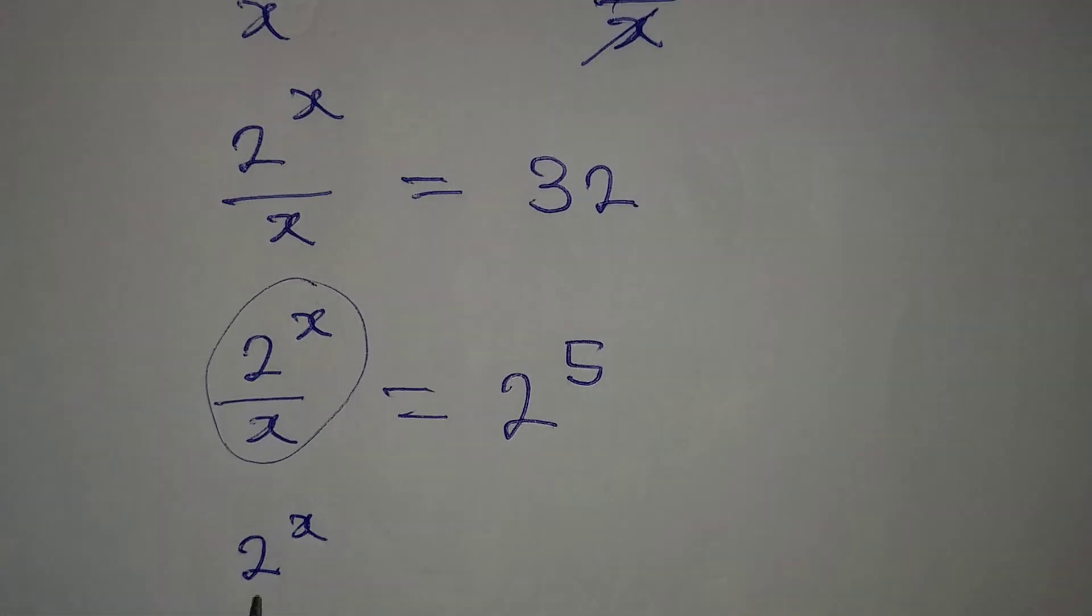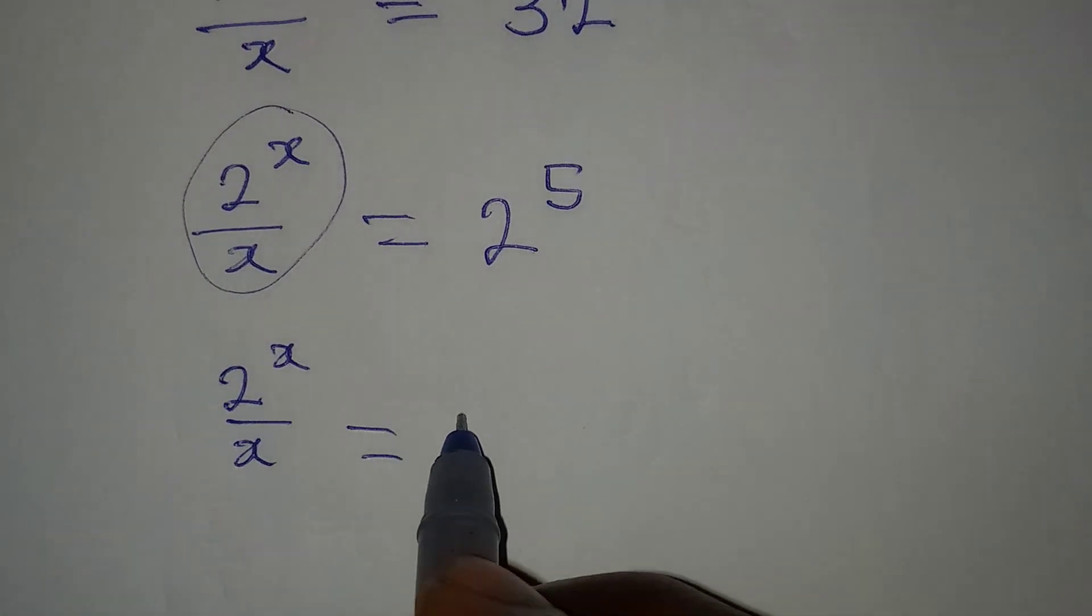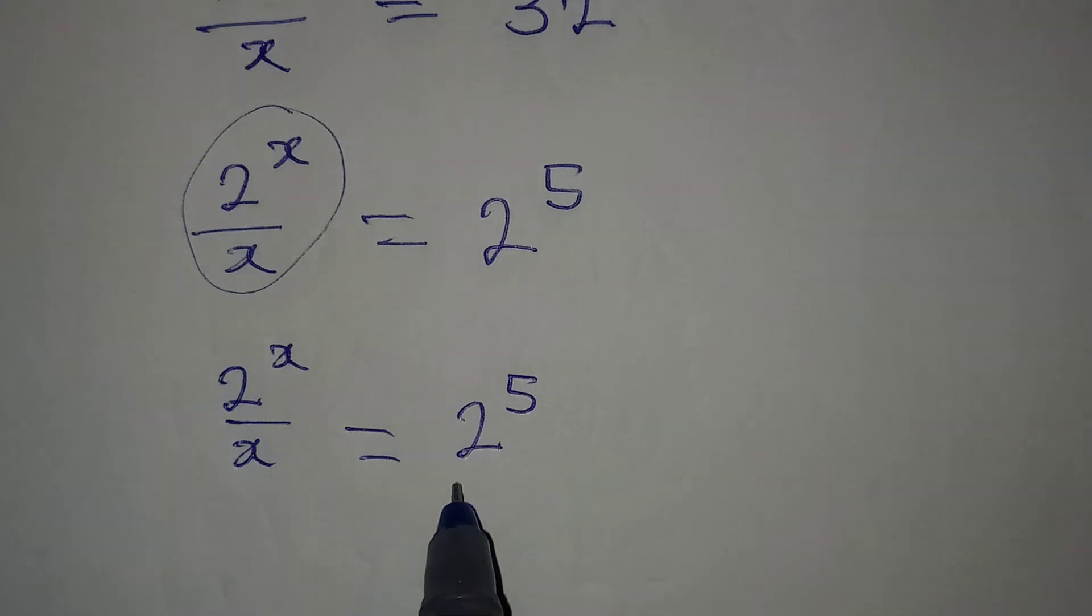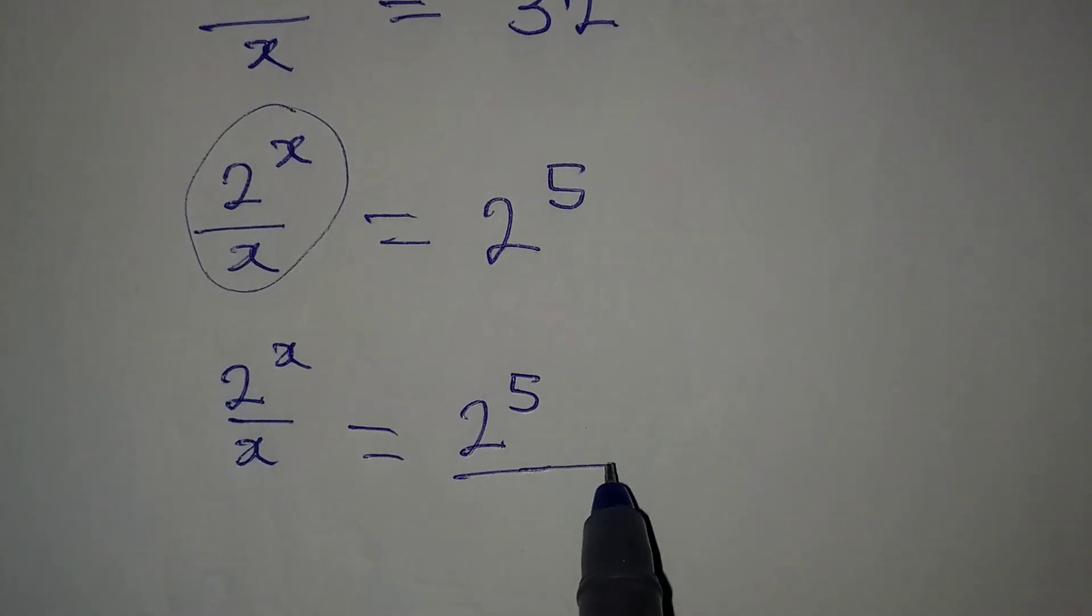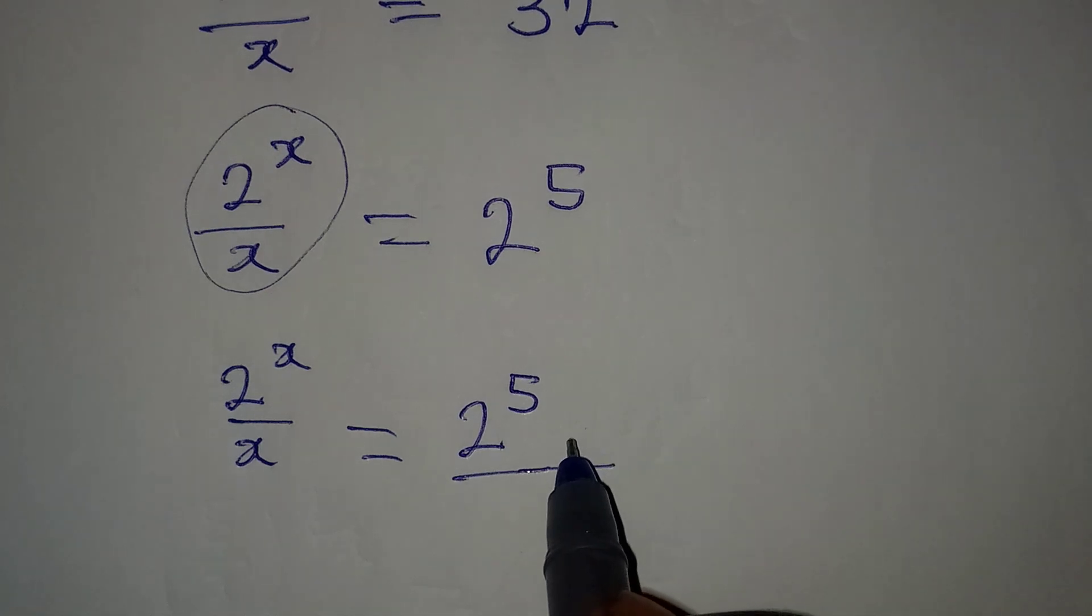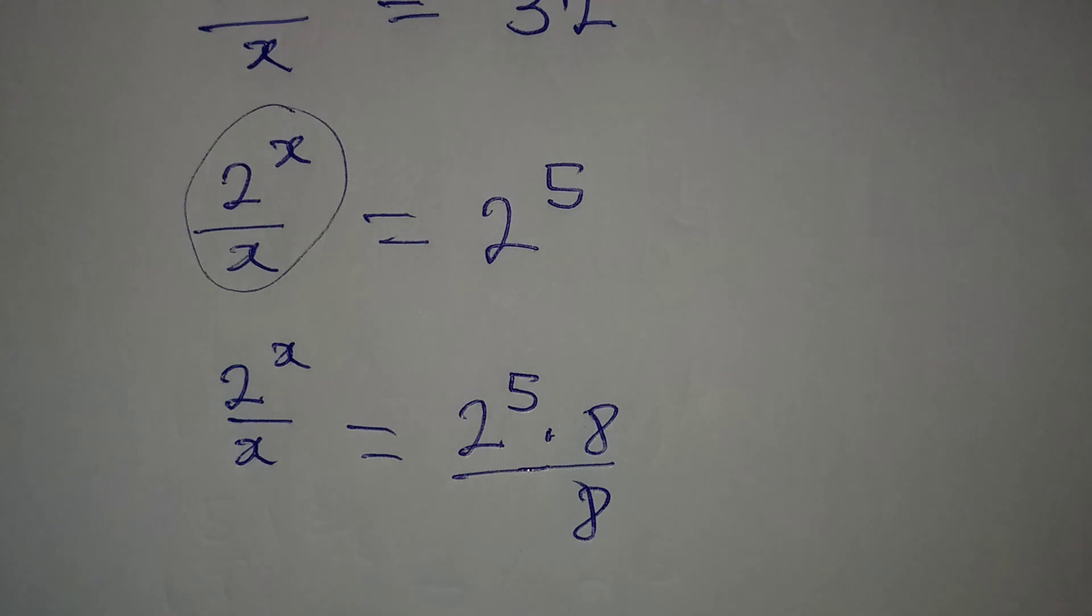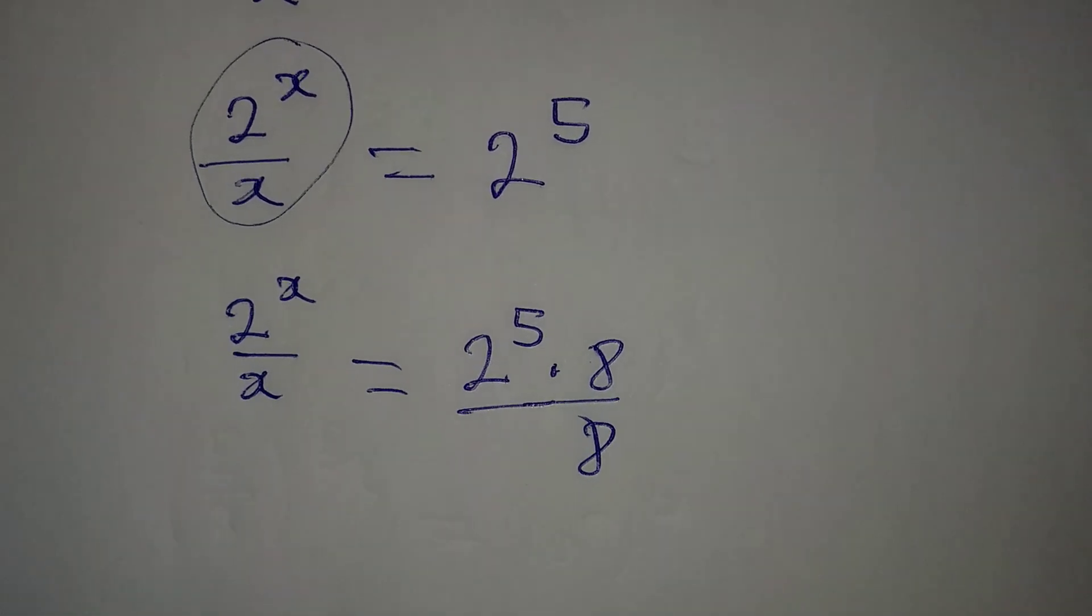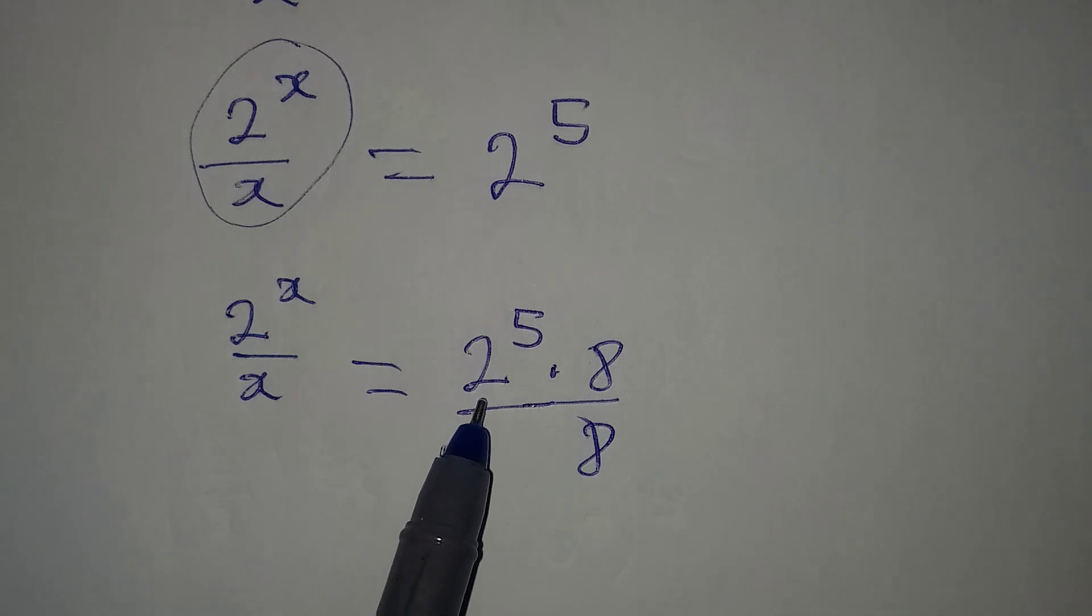So I'm going to write 2 to the power of x over x, being equal to 2 to the power of 5, divided by, but I have to multiply this by 8 again, then divide this by 8. Because from here, 8 over 8 will still give us 1. It does not change anything here.